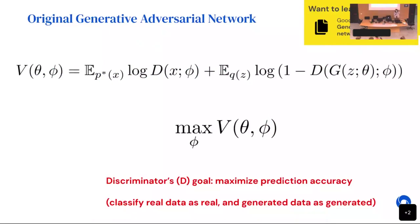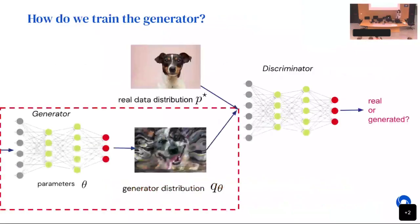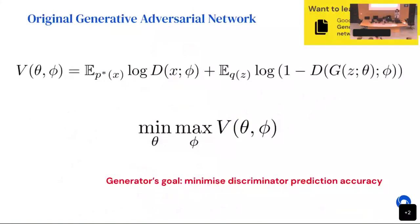The goal of the discriminator is to maximize its prediction accuracy — you just train a classifier. Once you have this, the question is how do you train the generator? An intuitive way is to make the generator fool the discriminator: whatever the discriminator is maximizing, the generator should minimize.